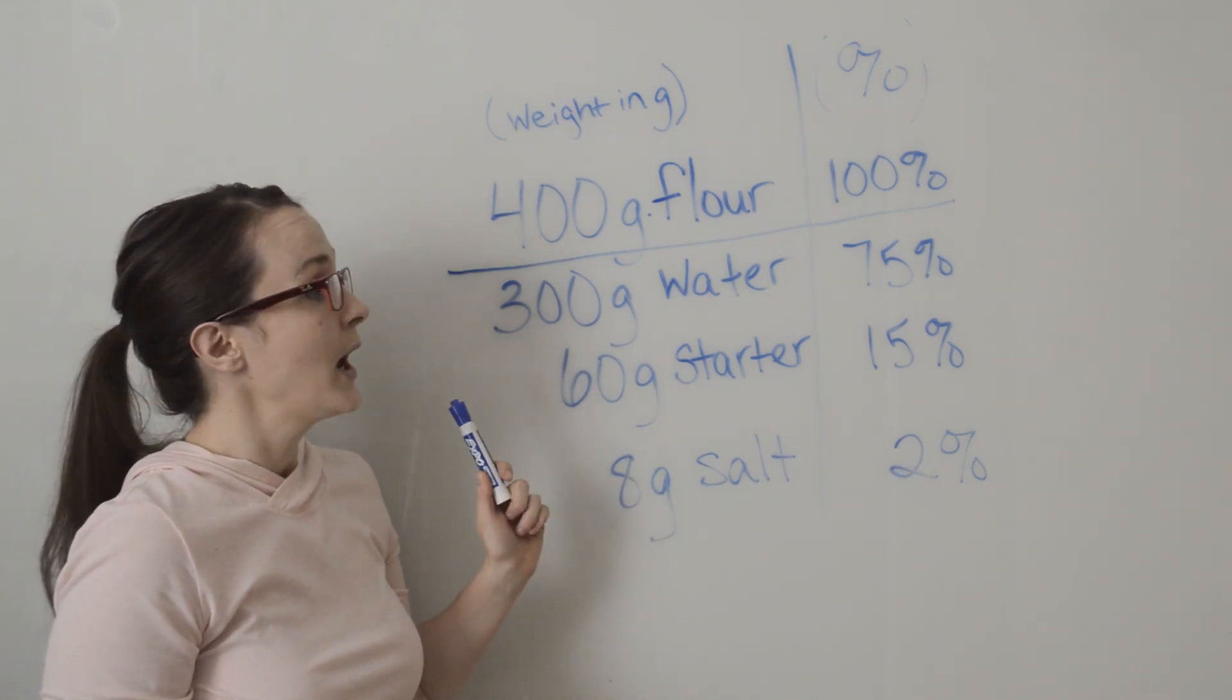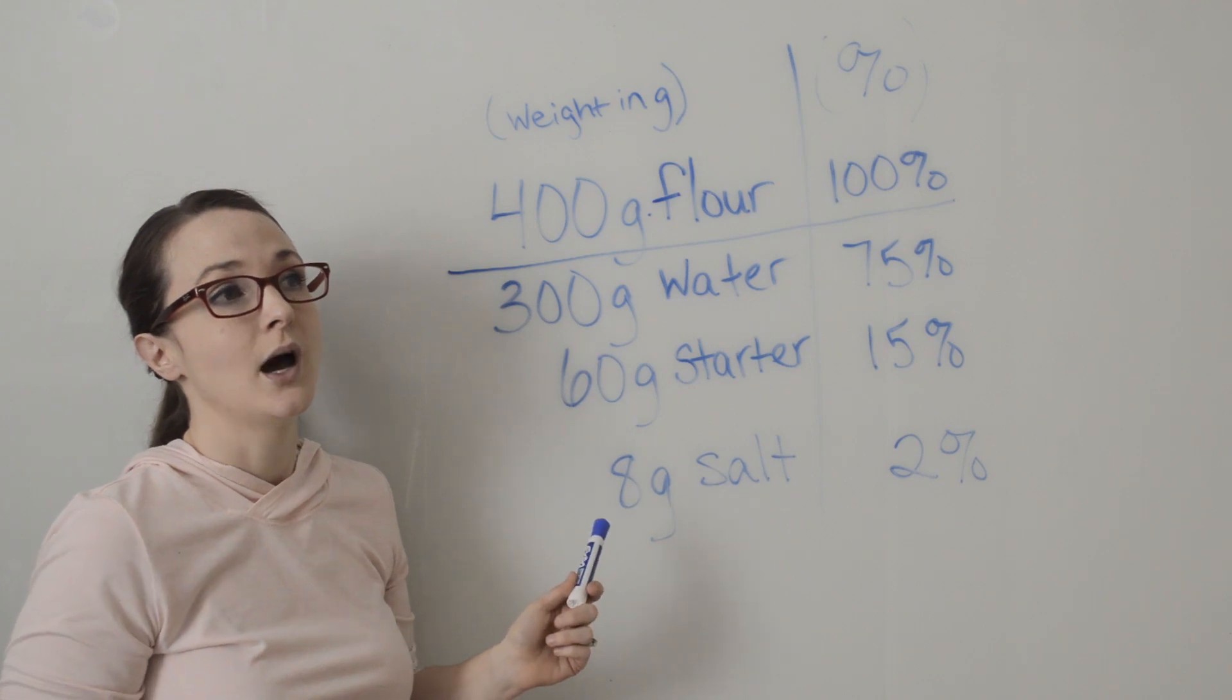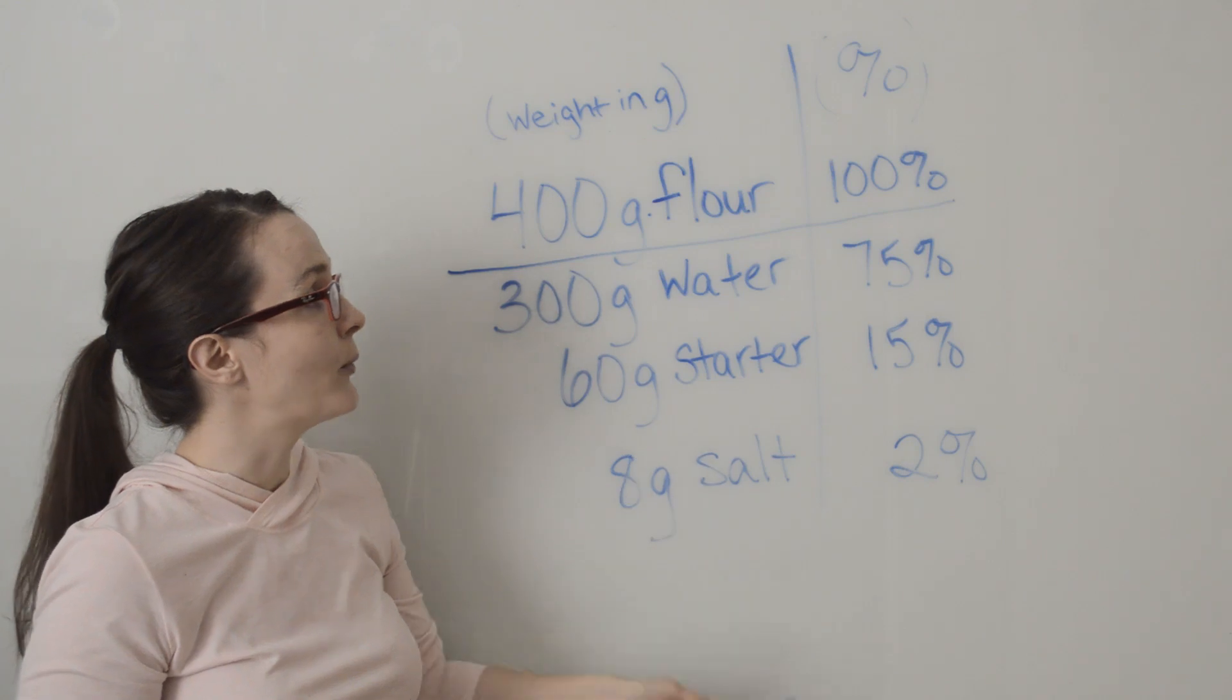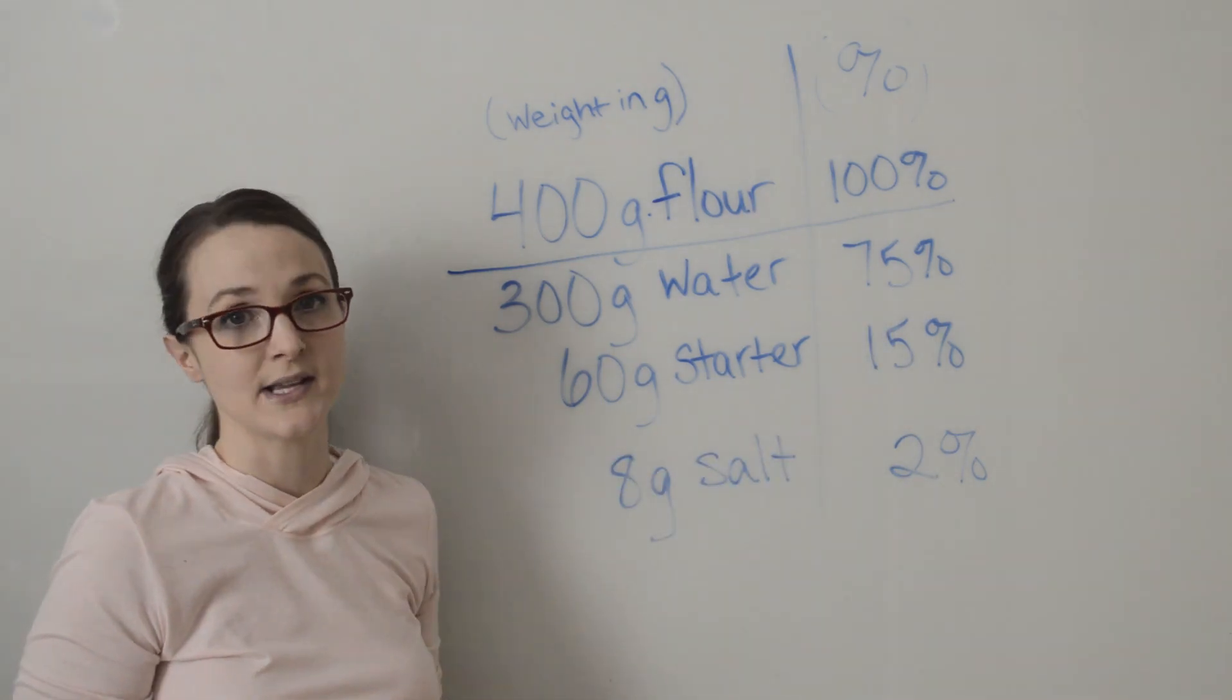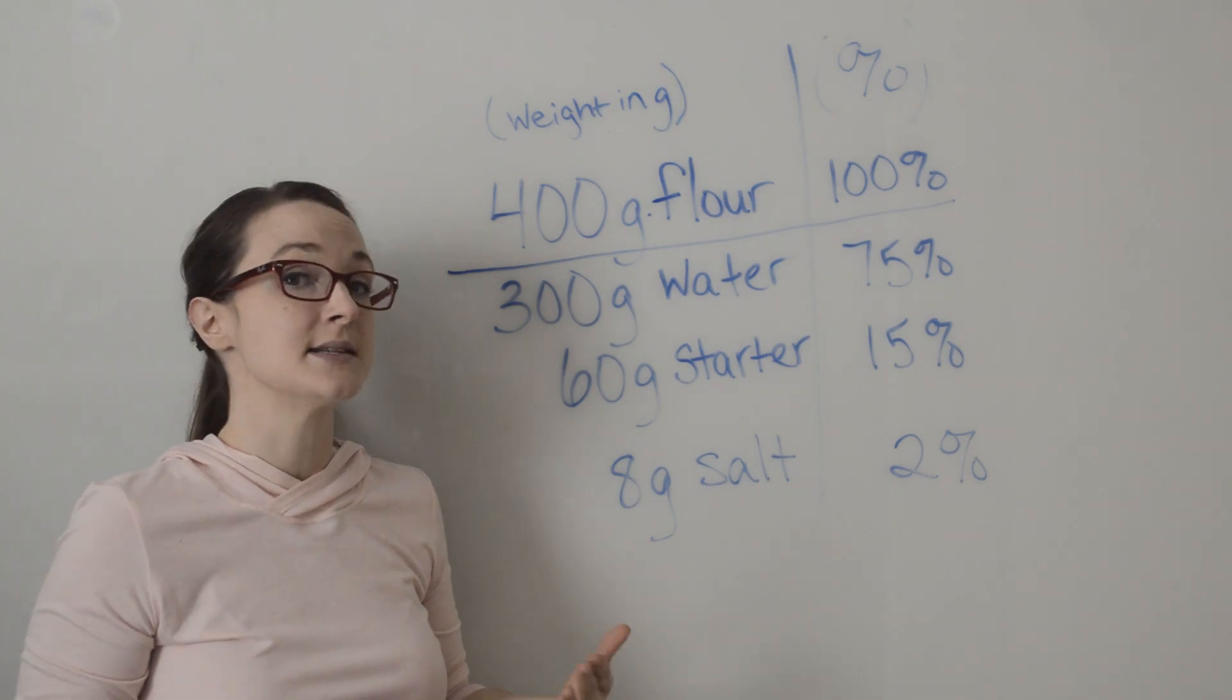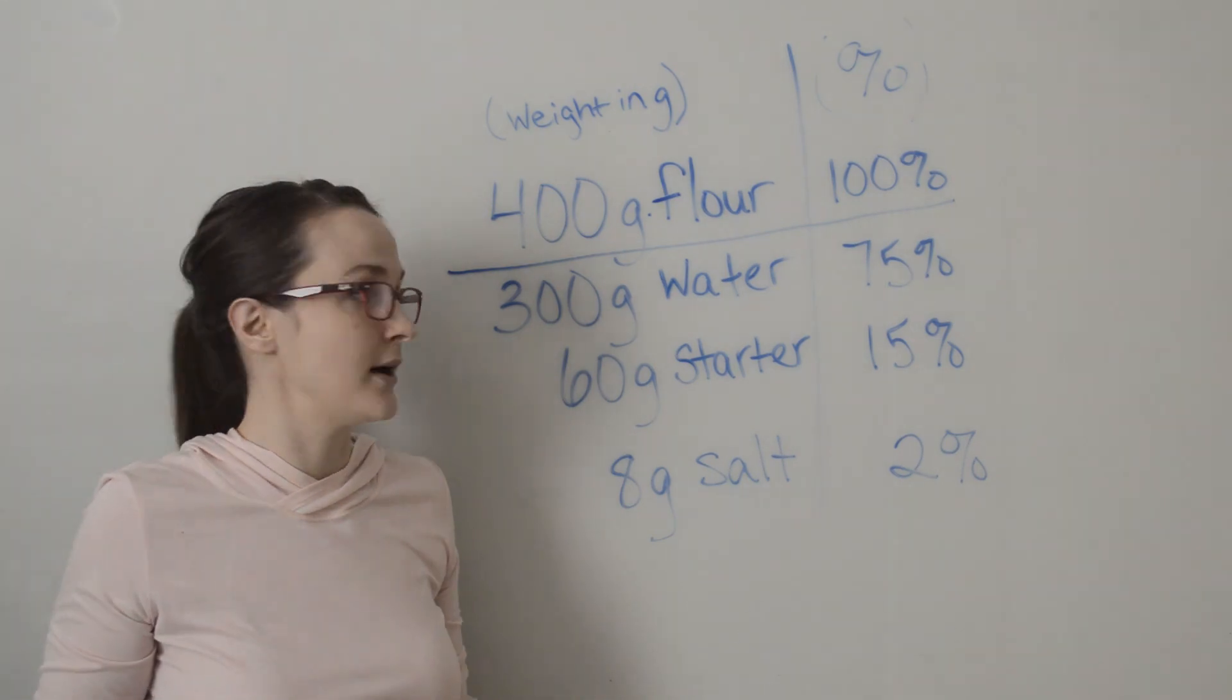Now because we know how we got to these percentages, we also know that we can reverse engineer that. If I had a loaf and I was going to use one kilogram of flour, that's 1000 grams, and I know that I want to do 75% hydration, well what is 75% of 1000? It's 750.